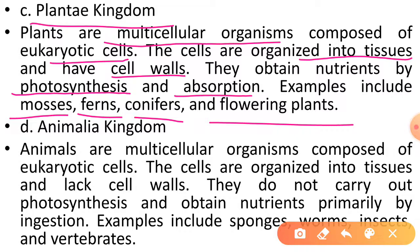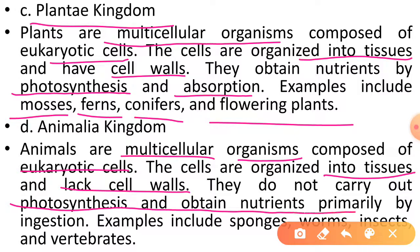Chautha kingdom Animalia kingdom hoga. Animals are multicellular organisms composed of eukaryotic cells. The cells are organized into tissues. Animals ke andar cell walls nahi payi jaengi. They don't carry out photosynthesis — apna nutrition primarily ingestion ke dwara prapt karenge. Examples mein sponges, worms, insects aur vertebrates aayenge. Thanks students — yeh hamara Three Domains System of Life ka concept poora hota hai.